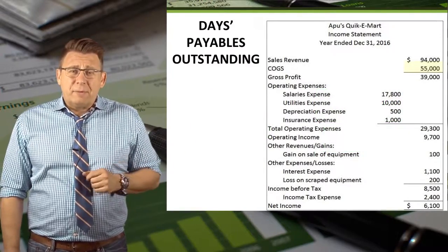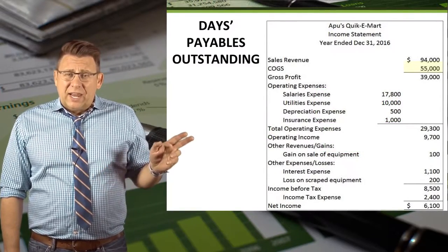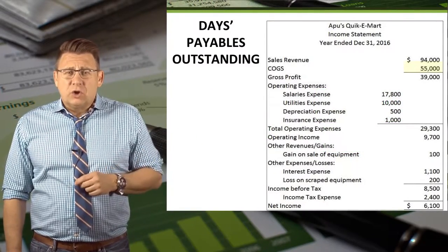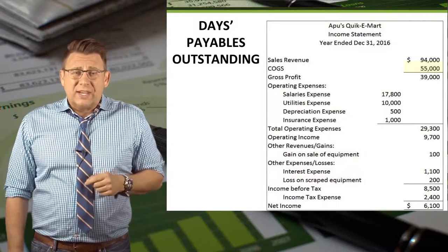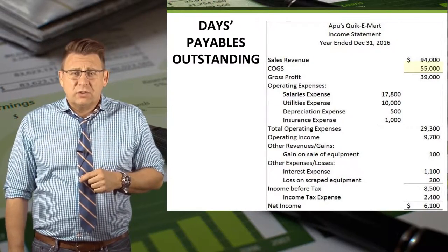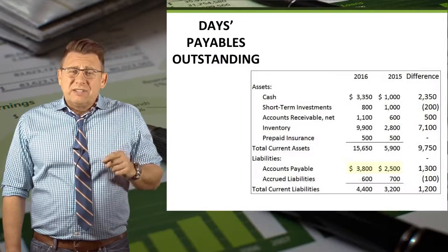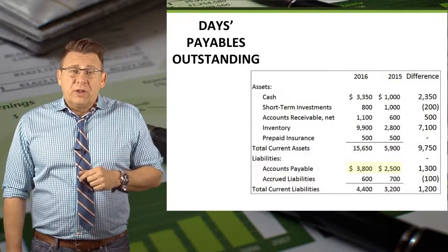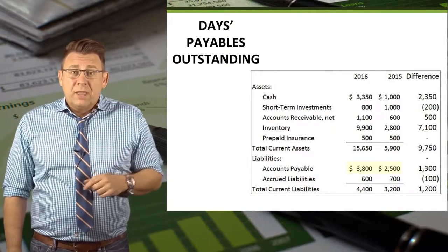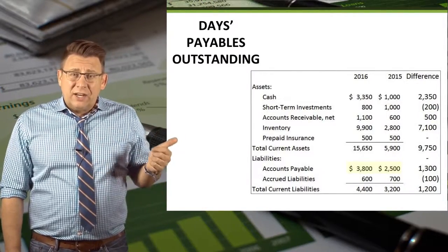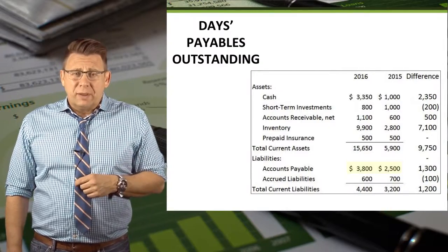Here's an income statement from a sample company. I've highlighted cost of goods sold and will use that information to determine the average one day's cost of goods sold. Additionally, we'll need some information from the current liabilities section of a balance sheet. I've highlighted two years worth of accounts payable balances.